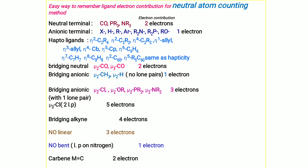NO linear contributes 3 electrons, NO bent contributes 1 electron, and carbene (=CR₂) contributes 2 electrons.